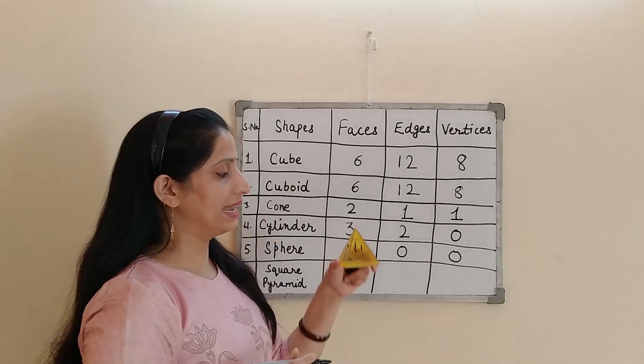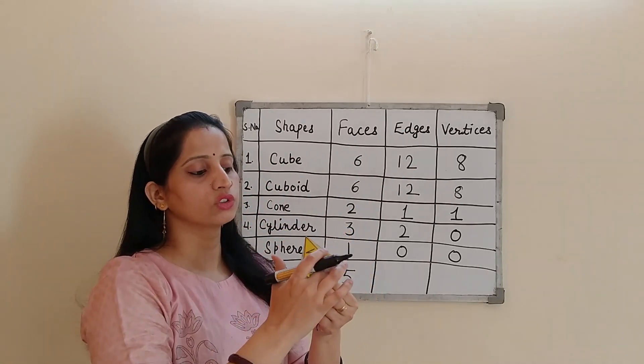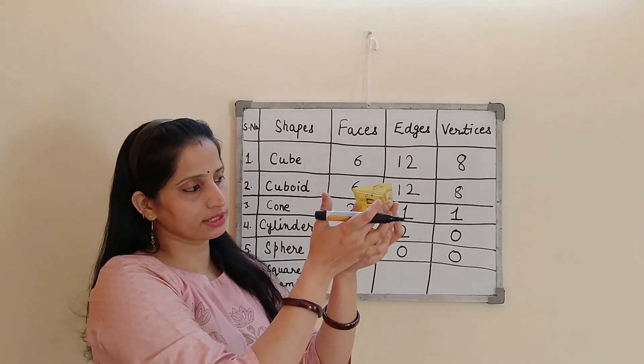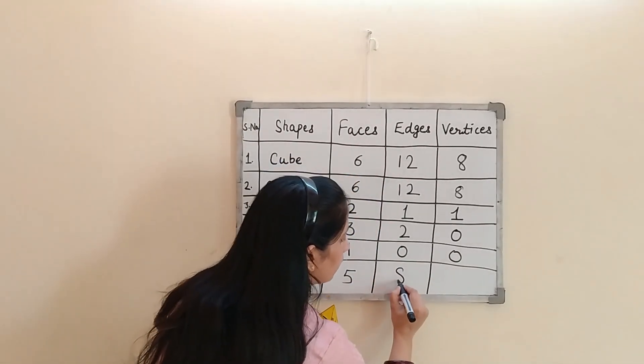Now let's count about the edges. See, edges. 1, 2, 3, 4, 5, 6, 7, and 8. Number of edges. 8.